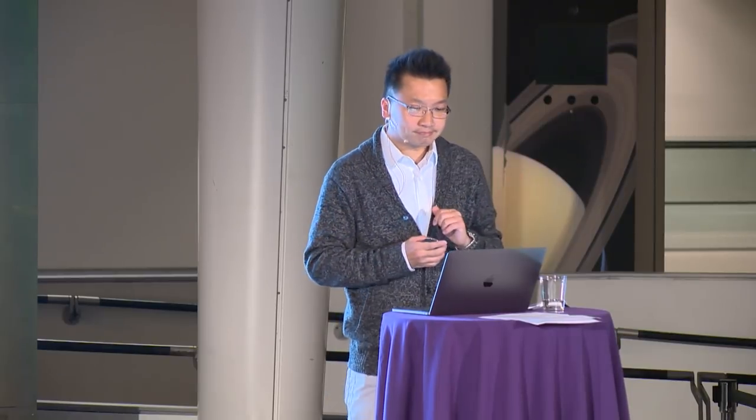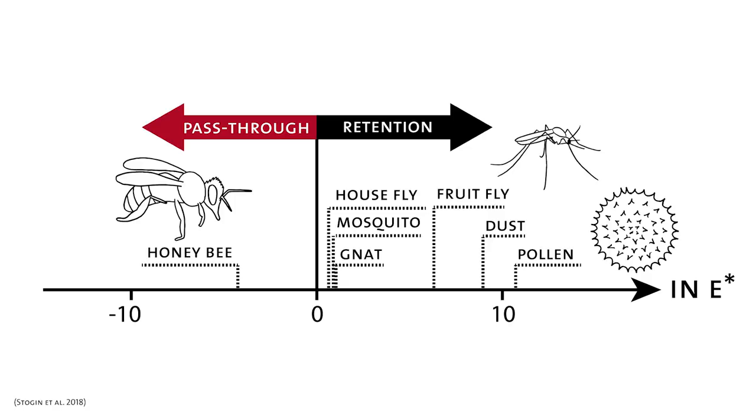And to quantify this mechanism Birgitta has defined this E-star parameter which is simply the ratio between the surface energy of the film and the kinetic energy of the particle. So with this E-star parameter, if E-star is larger than one meaning that the kinetic energy of the particle is smaller than the surface energy of the film which means that the particle will be retained. On the other hand when E-star is smaller than one meaning that the kinetic energy of the particle is now larger than the surface energy of the film the particle will pass through. So this is important because we can tune this membrane for specific size selectivity.